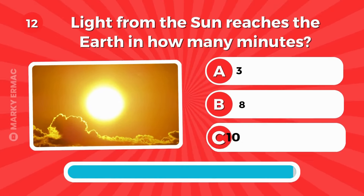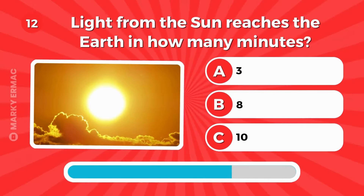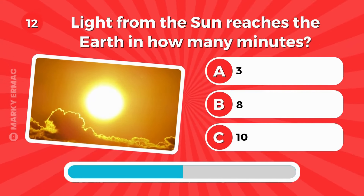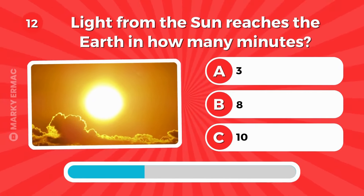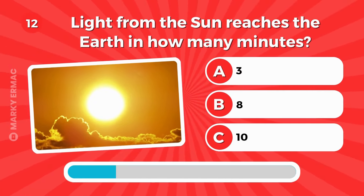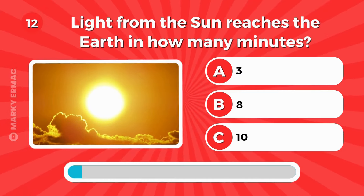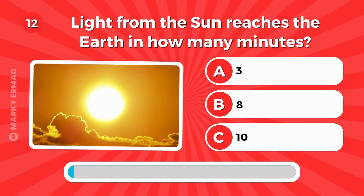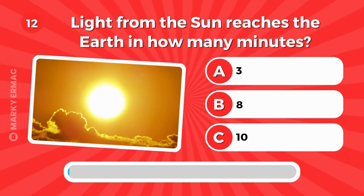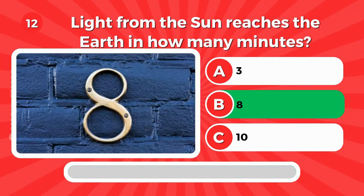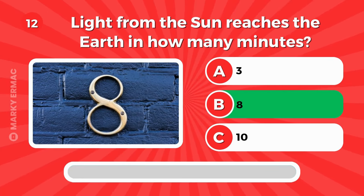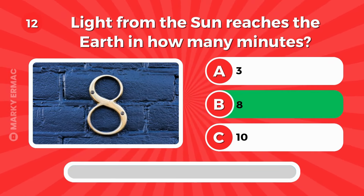Light from the sun reaches the Earth in how many minutes? It's 8 minutes.